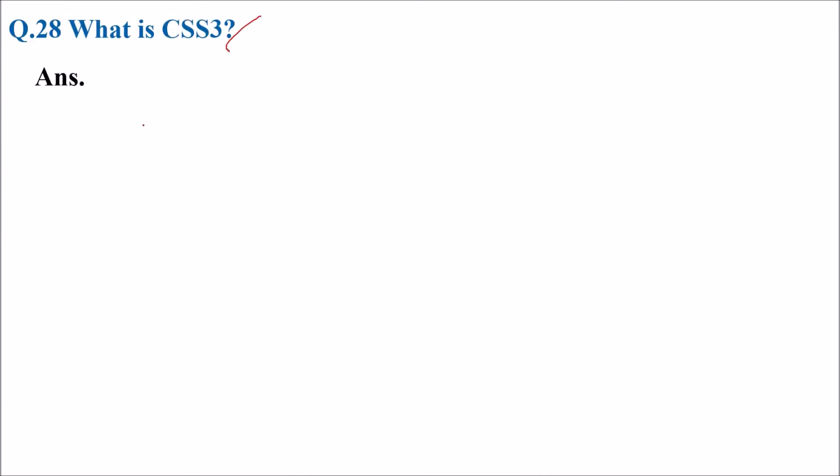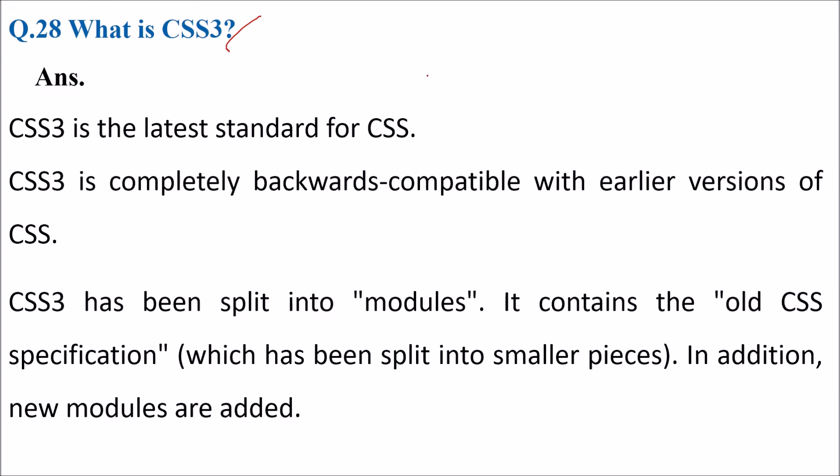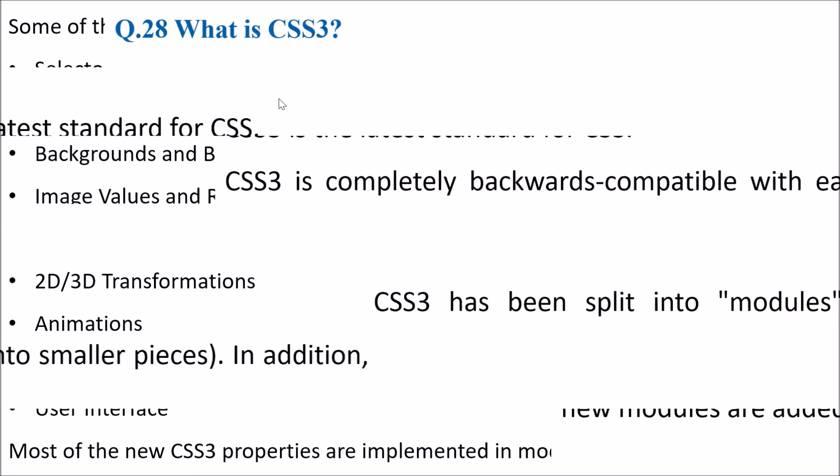What is CSS3? CSS3 is the latest standard of CSS, completely backward compatible with earlier versions. CSS3 has been split into modules containing the old CSS specification split into smaller pieces, and new modules are added.